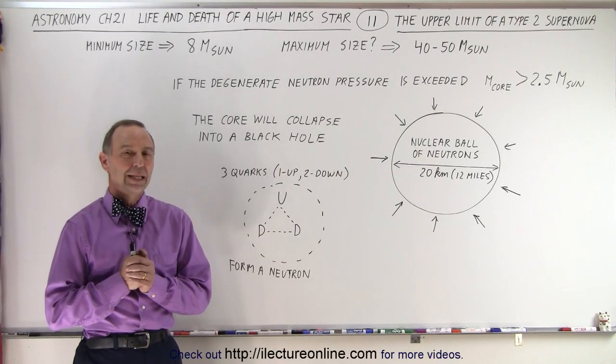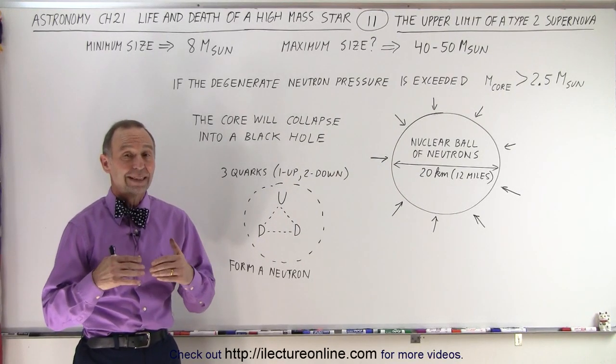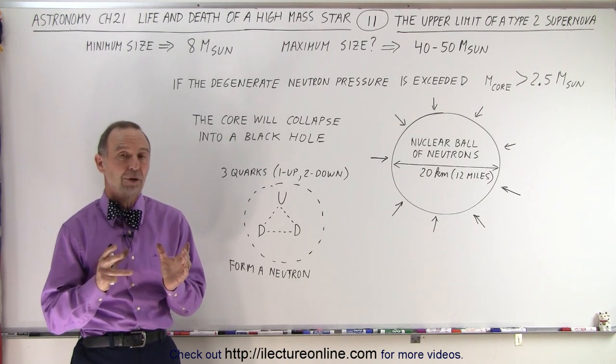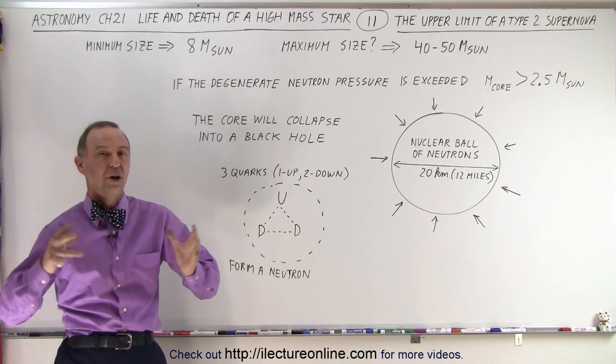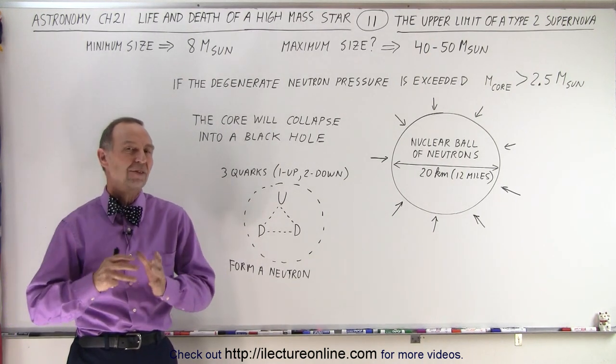Welcome to our lecture online. When we started this series, we said that the minimum mass required for this type of process where we end up with a Type 2 supernova is a star with at least eight times the mass of the sun.